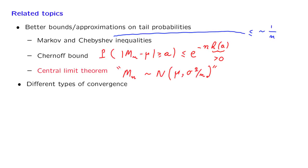In a different direction, we can talk about different types of convergence. We did define convergence in probability, but that's not the only notion of convergence that's relevant to random variables.